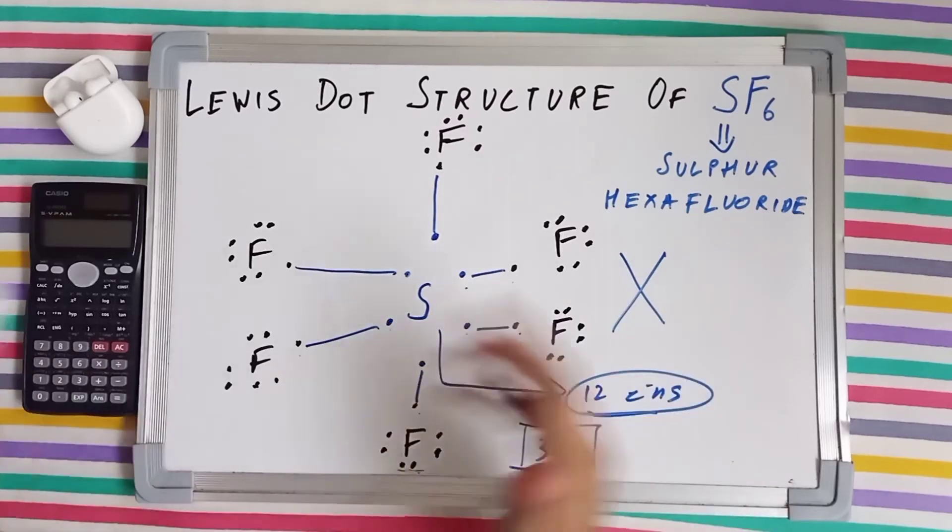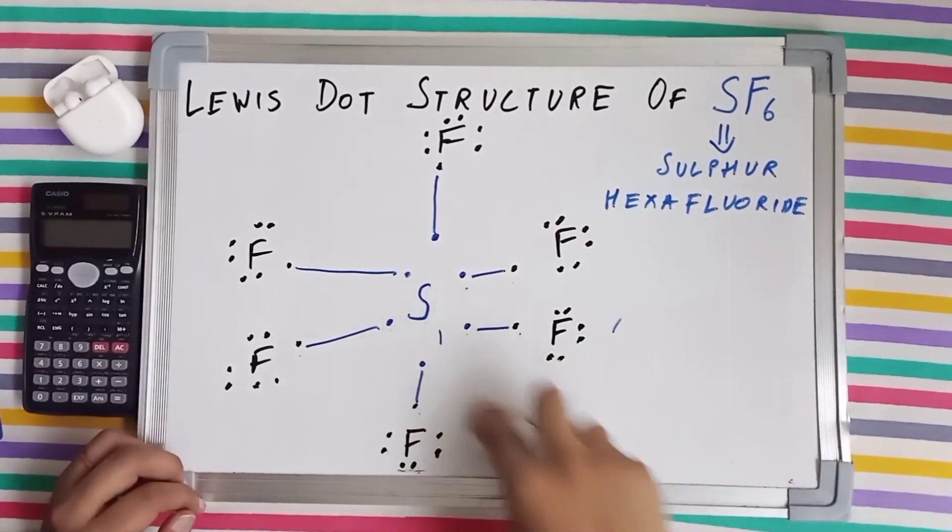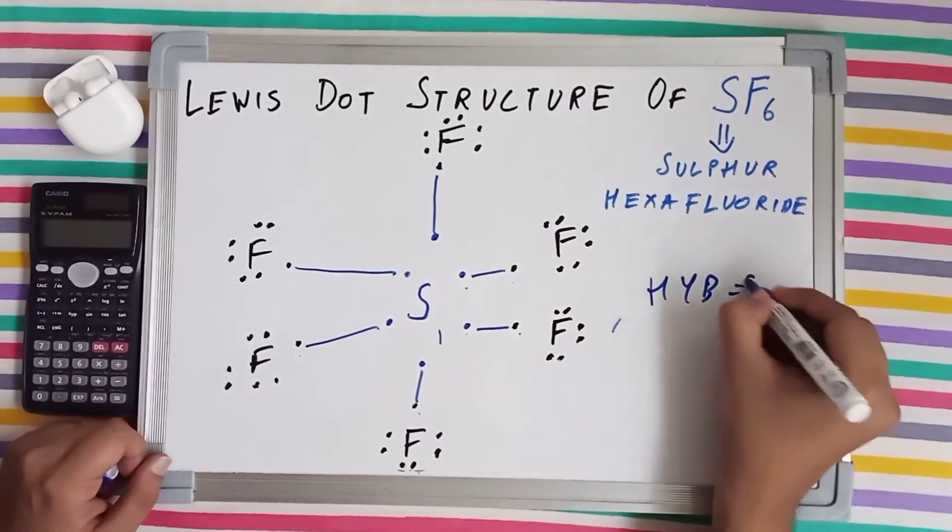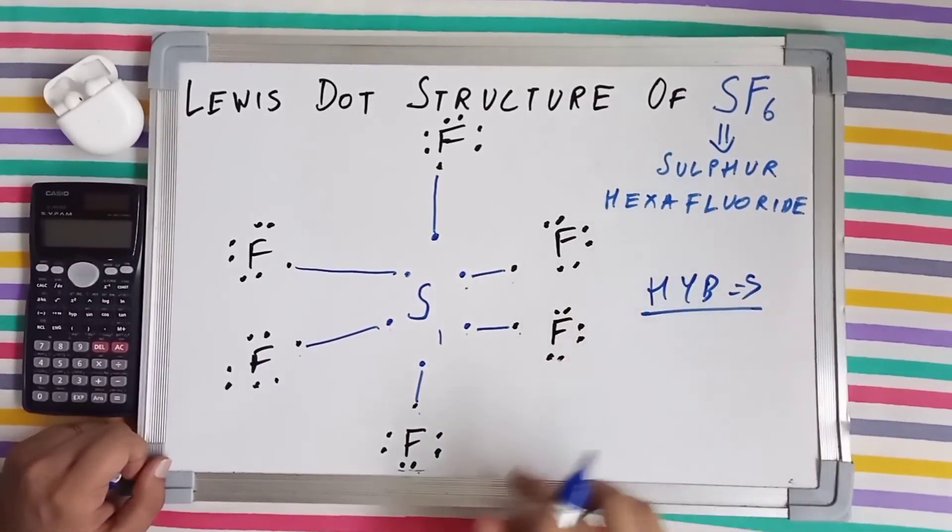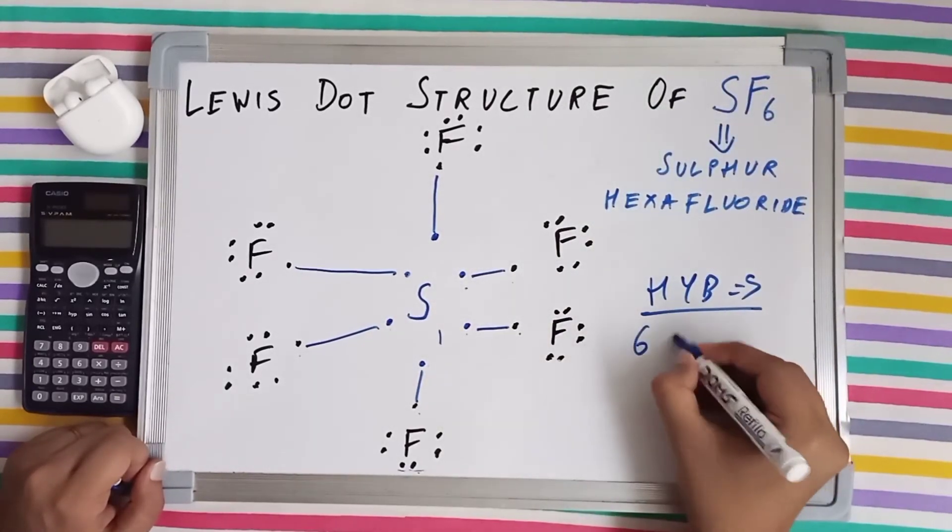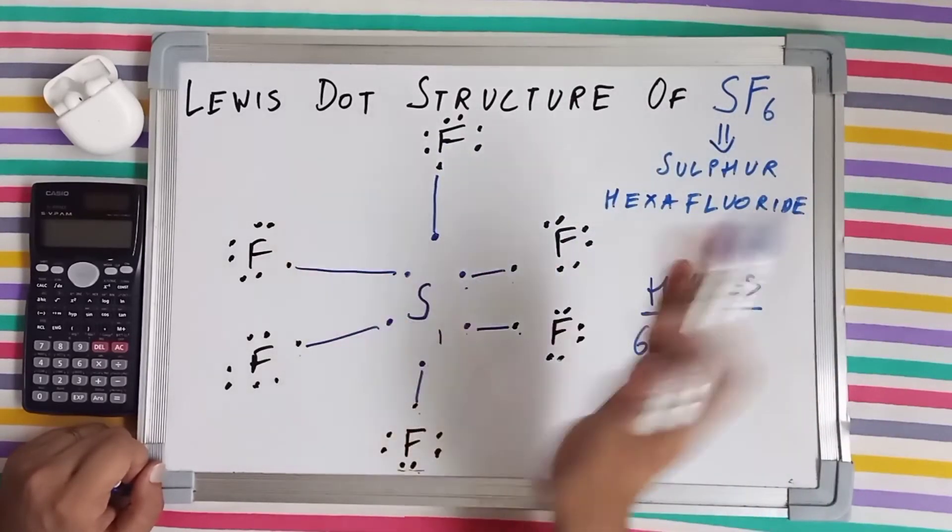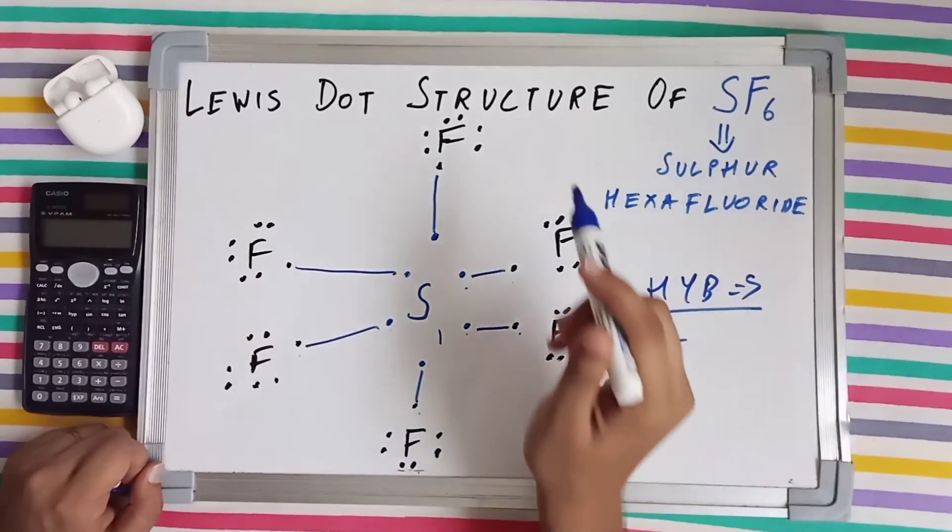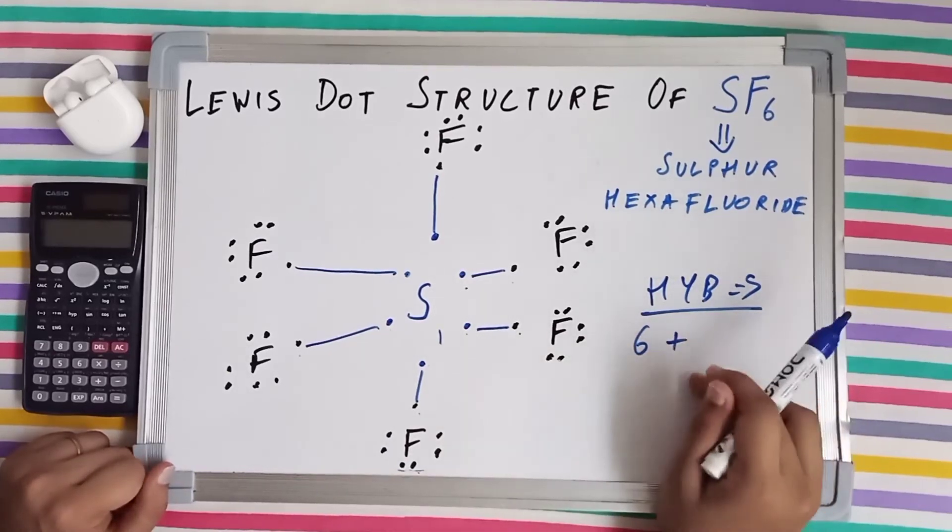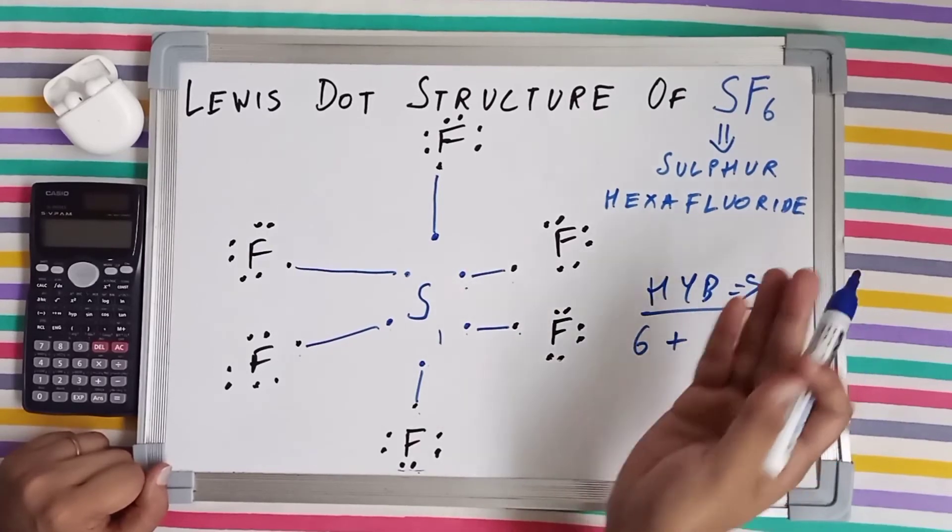One more thing. Let's find out the hybridization of this molecule. So for finding the hybridization, let's count the number of valence electrons. Sulfur has six valence electrons. And fluorine had seven valence electrons in non-bonded form. We are counting the number of valence electrons in non-bonded form. Always remember that while we are calculating the hybridization of molecules, we take the valence electrons in non-bonded form.